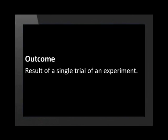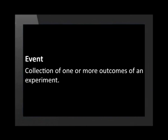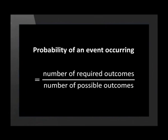Let's define a few more terms we will need to know. An outcome is a result we get from a single trial of an experiment. An event is a collection of one or more outcomes of an experiment. Probability is expressed as a fraction — the probability of an event occurring is equal to the number of required outcomes divided by the number of possible outcomes.